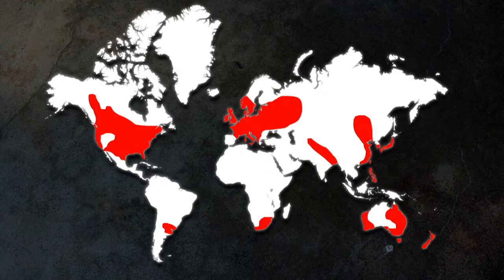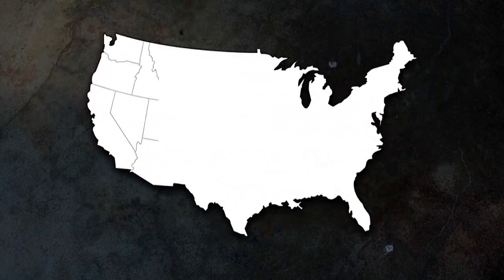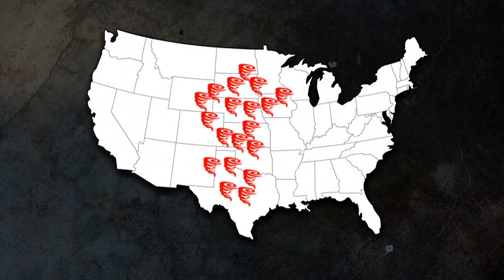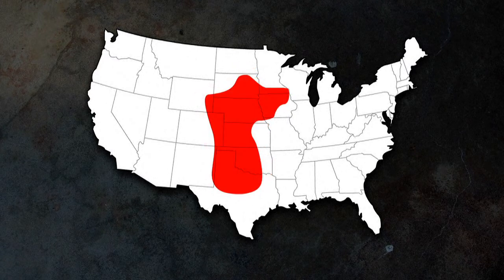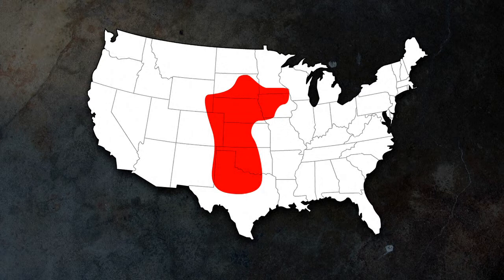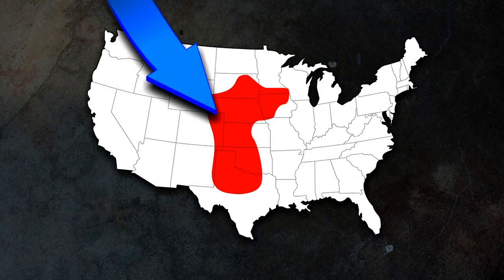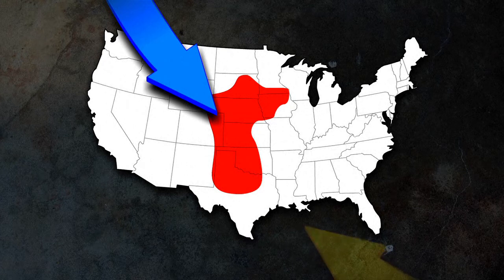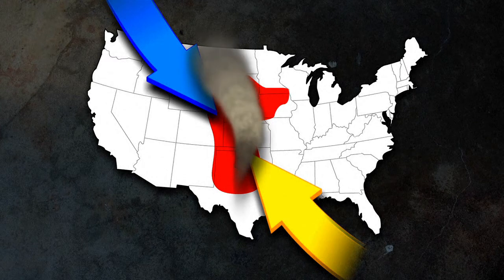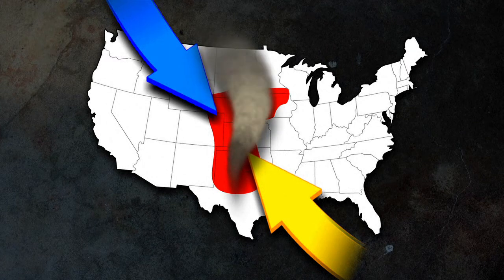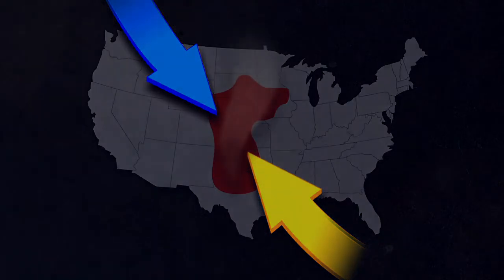Tornadoes can form all across the world, but they most frequently hit the US, where annually there are more than 1,000. Conditions in the Midwest's aptly named Tornado Alley are ideal for their formation. In spring, cold air from the Rockies and Canada descends upon the region's plains at the same time as warm, humid air creeps up from the Gulf of Mexico. The clash sparks impressively powerful and potentially deadly tornadoes.